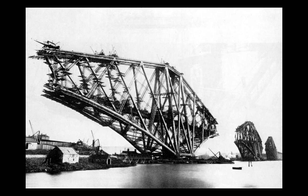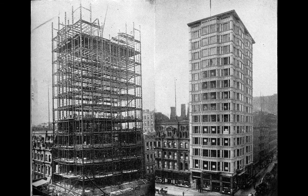Much more sophisticated structures followed, like the Forth Bridge in the early 1890s — the first all-steel bridge in the world — utilizing the cantilever principle, building three towers outward from rocky outcrops, engineered to stay stable before the spans are joined. At the same time, steel had other possibilities: not only long spans but great heights. Architects, builders, and engineers in New York, Chicago, and Philadelphia found ways to exploit steel to span farther but also to build taller, stacking more and more rent-paying floors on top of one another in big cities.